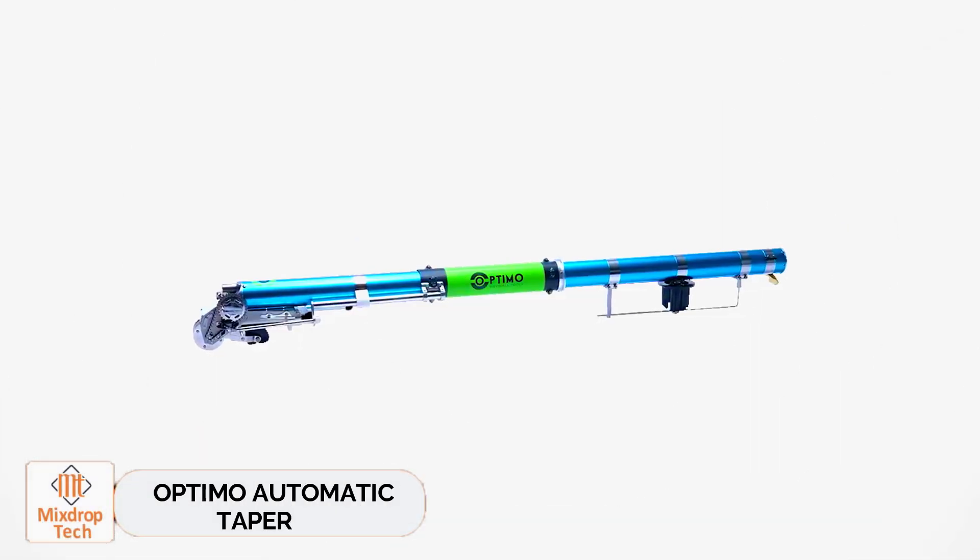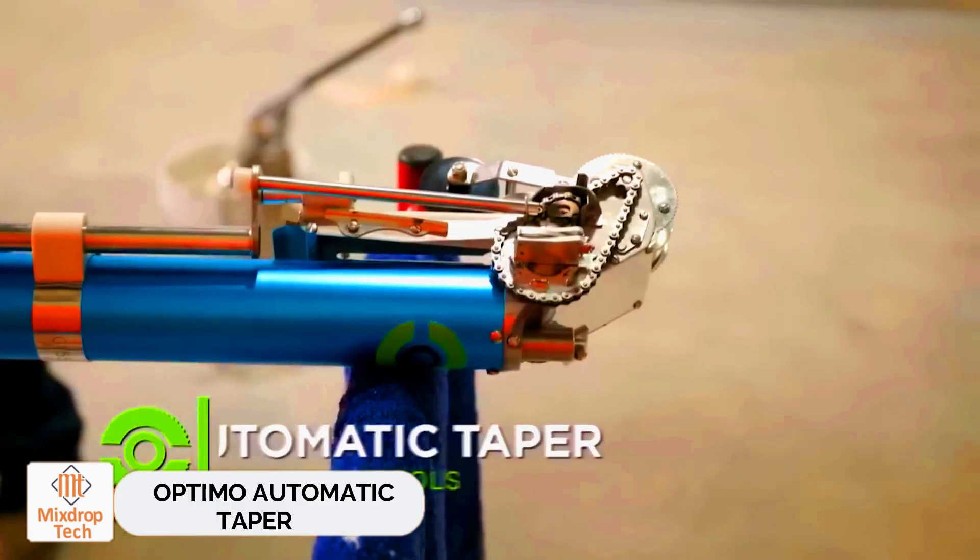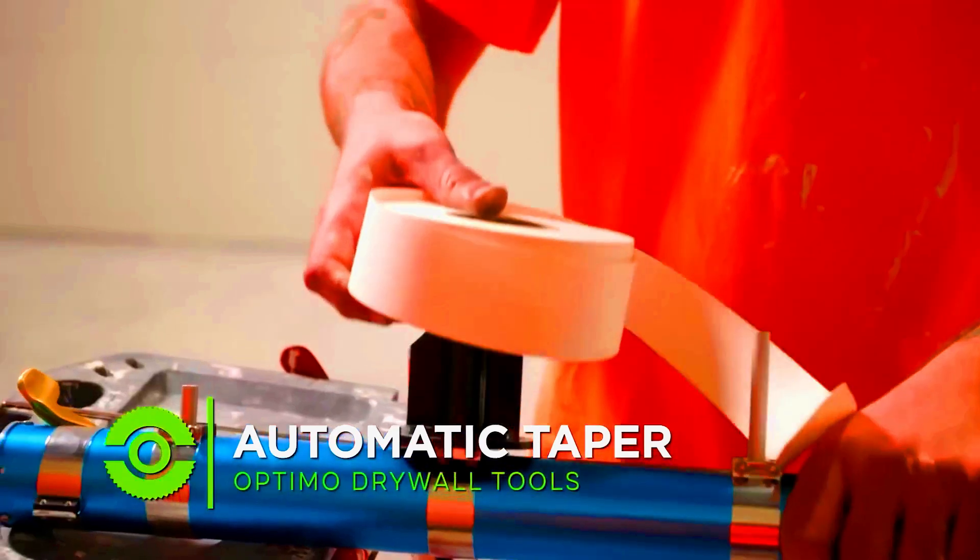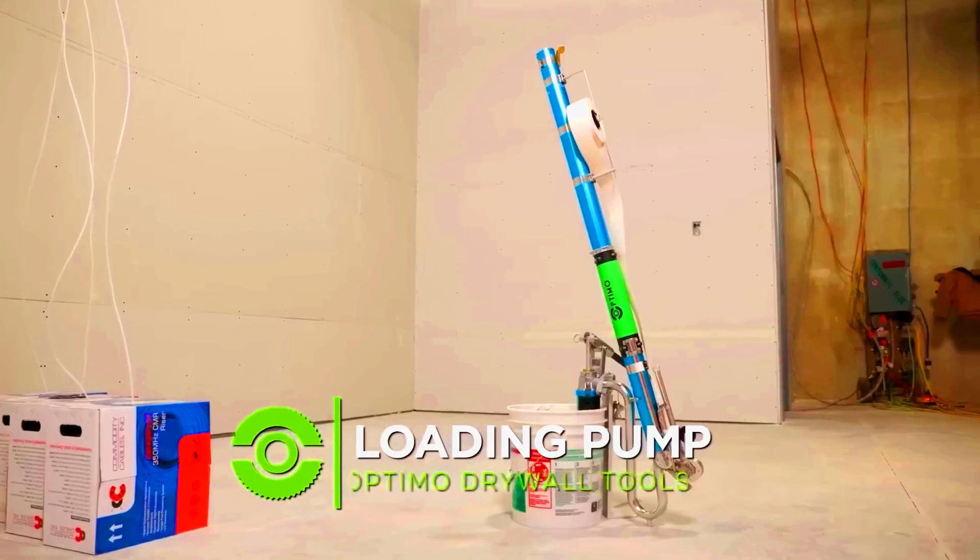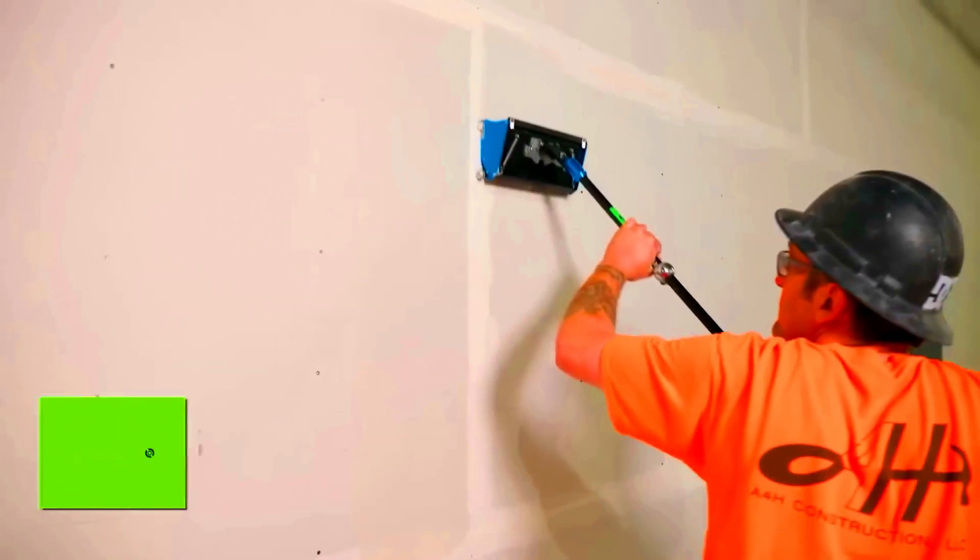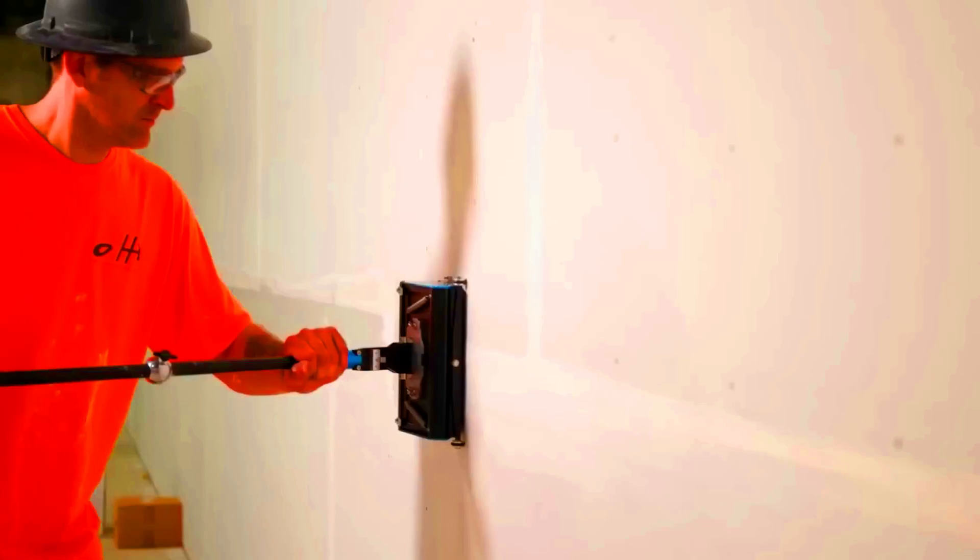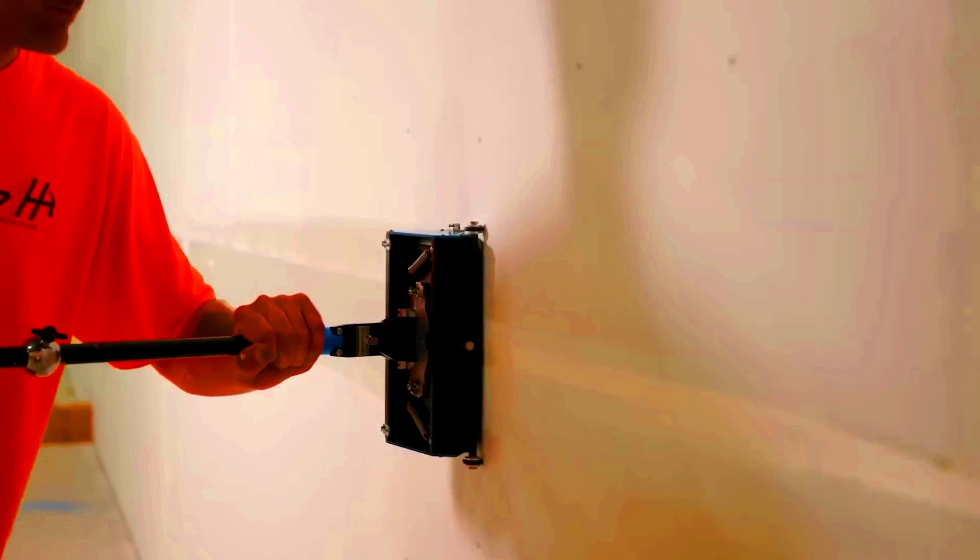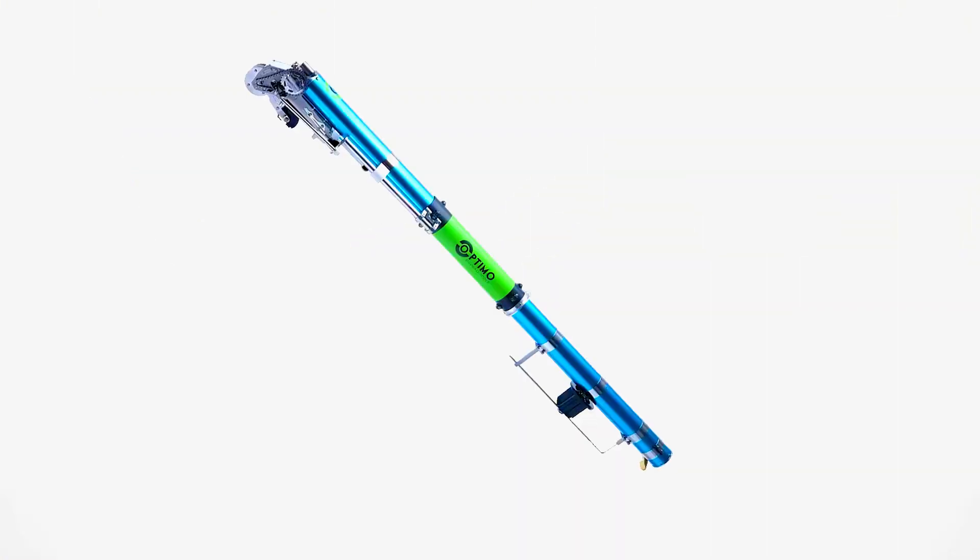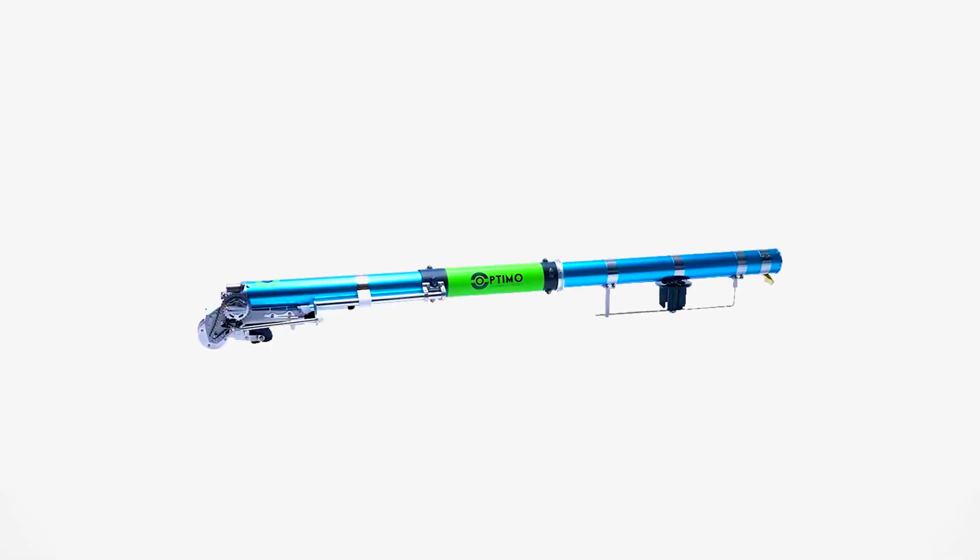Optimo Automatic Taper. In the world of drywall, there are a couple of interesting innovations as well. The person in this video is using the Optimo Automatic Taper. He efficiently covers the seams with tape, immediately fills it with putty, and then cuts it off. This purely mechanical tool with no electronic components has won over many customers.